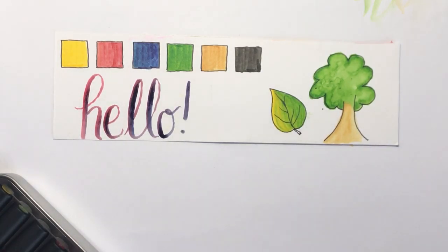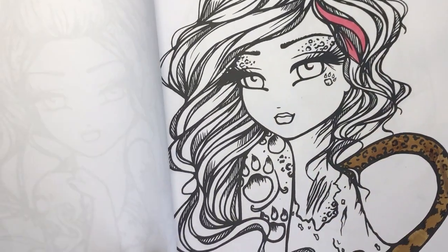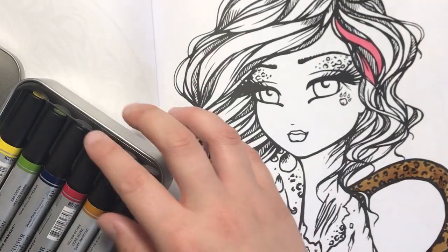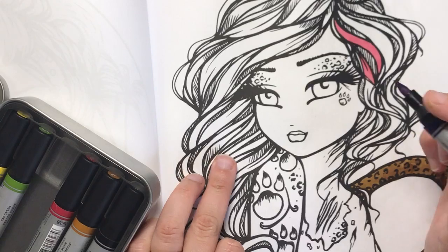I'll just very quickly show you how they colour on very thin paper that you might find in Amazon printed colouring books. Let's go with that blue.